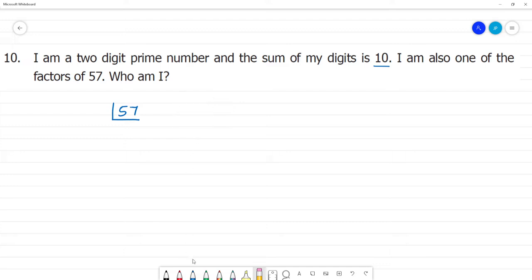57 divided by 3 is 19. So 3 is 1 factor and 19 is a factor.